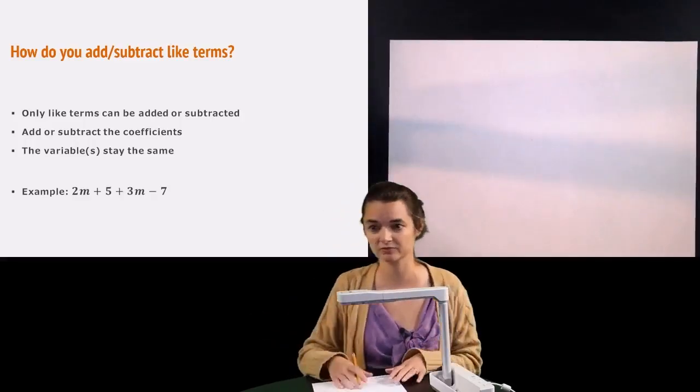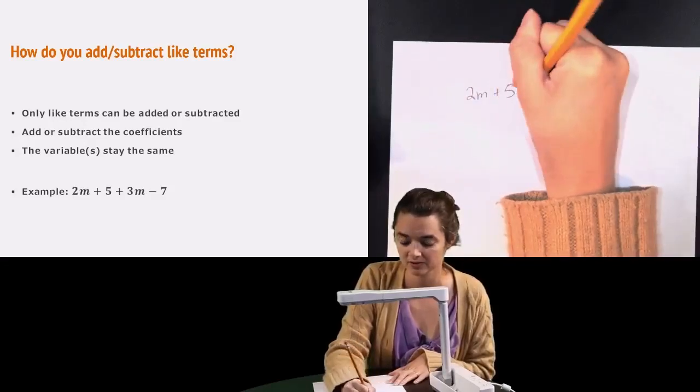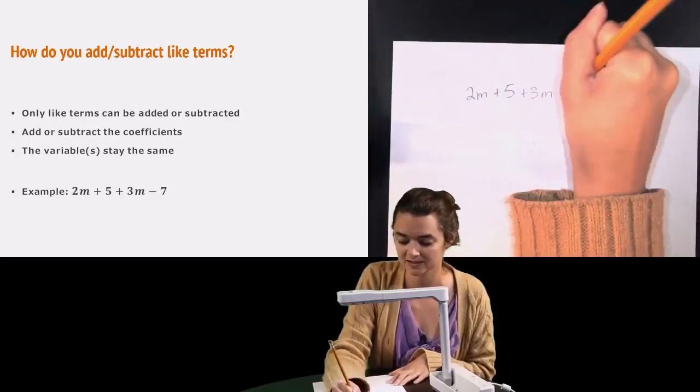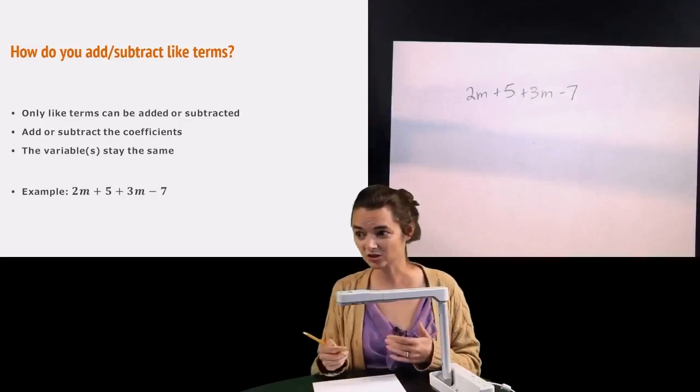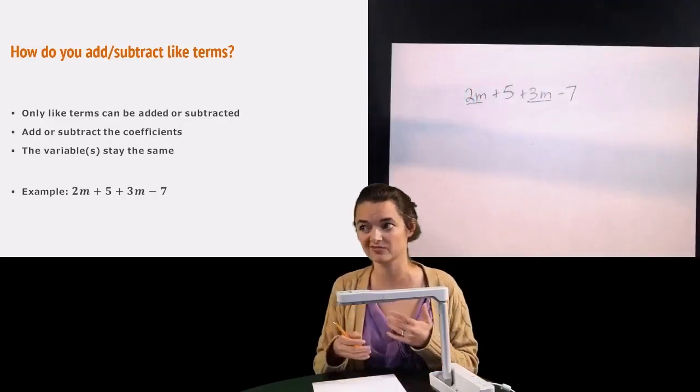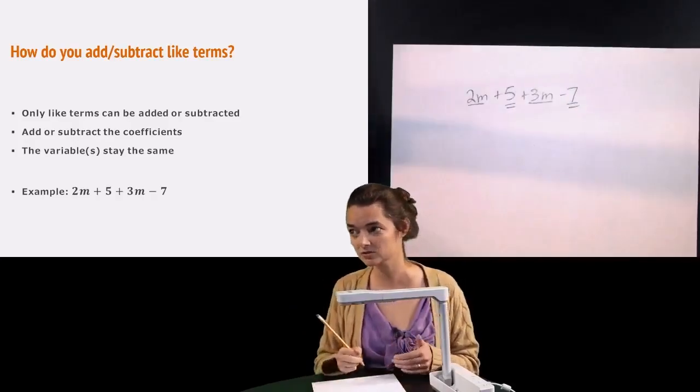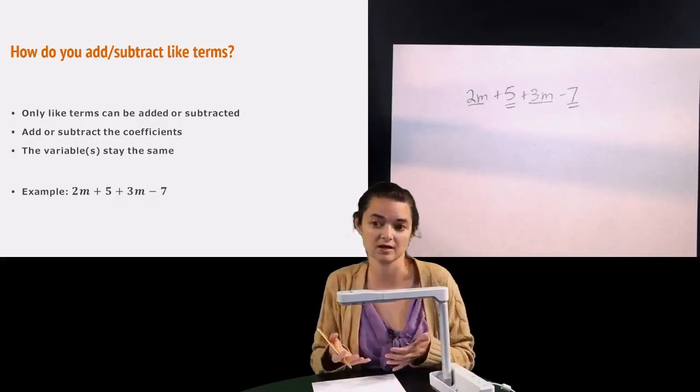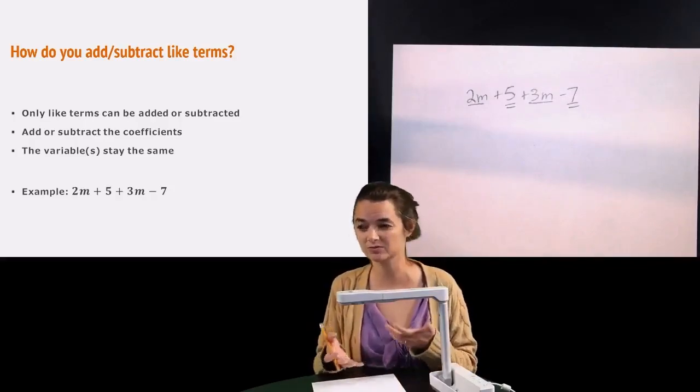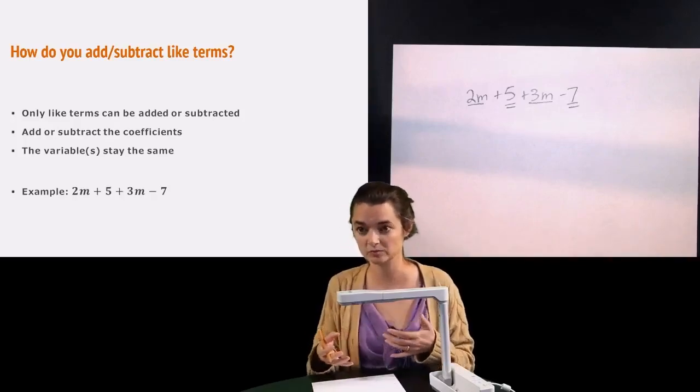So I have an example for you. We have 2m plus 5 plus 3m minus 7. So the like terms would be 2m and 3m because they both have m's to them. Also, 5 and 7 are like terms because they're just constants. They don't have a variable, which means that they're also alike. So we can add those two groups of things.